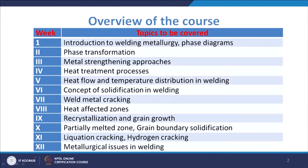In week 6 we will talk about different types of solidification processes, especially comparing casting and welding. Normally when we talk about solidification we relate it to casting, but a similar concept applies in welding as well. Weld metal cracking will be in week 7, heat affected zones in week 8, crystallization and grain growth in week 9, partially melted zone and grain boundary solidification in week 10, liquidation cracking and hydrogen cracking in week 11, and metallurgical issues in welding in week 12. Overall, in all 12 weeks we have 5 lectures each of approximately 30 minutes duration.